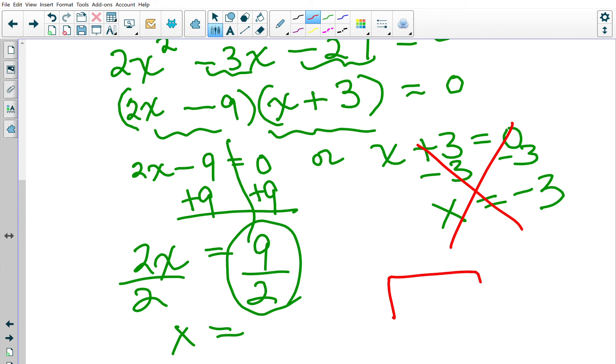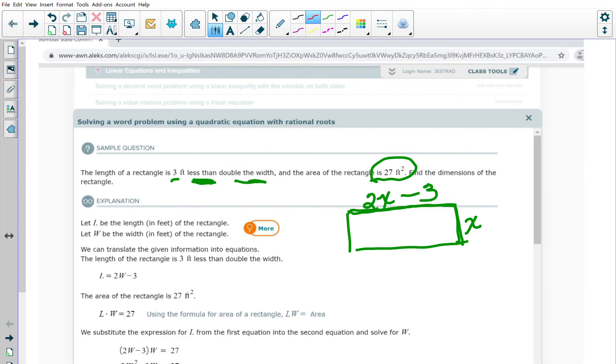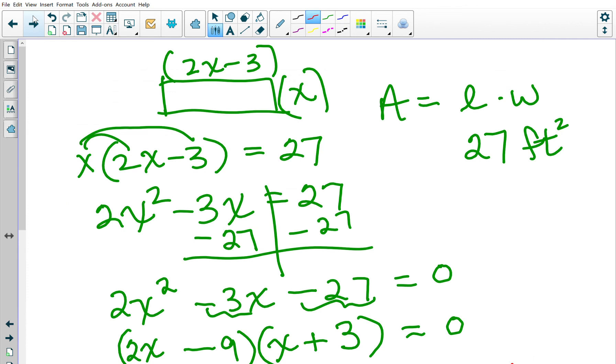X is my width, so my width is 9 halves. My length was 2X minus 9, so that's 2 times 9 halves minus 9. Wait, that can't be right. It's 3 less than twice the width, it's 2X minus 3. Sorry about that.